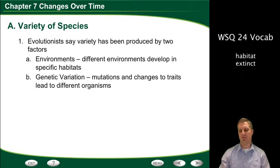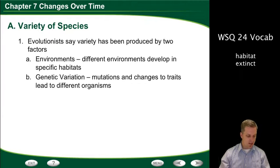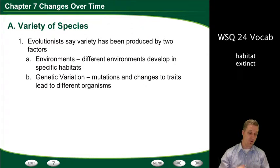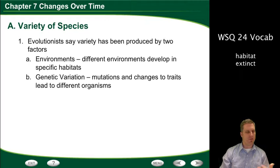First we have to talk about variety — what's meant by diversity and variety. Evolutionists say that variety has been produced by two different factors. If you were going to go to Yosemite in the spring and walk through it, you'd notice a large amount of different organisms. You can see the giant sequoias of Mariposa Grove, the different pines and redwoods throughout the forest, small flowers, different animals — there's a variety of different creatures just in that one place.